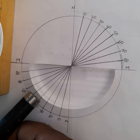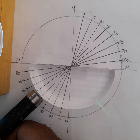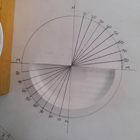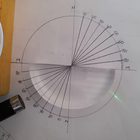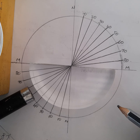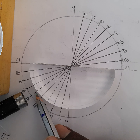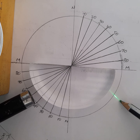Increasing the angle further, I get a ray that grazes the interface between the two media. Just a little more increase in the angle of incidence, and the refracted ray comes back into the denser medium. I have now set the angle of incidence to 50 degrees, which is more than the critical angle, and the light ray returns into the same medium.